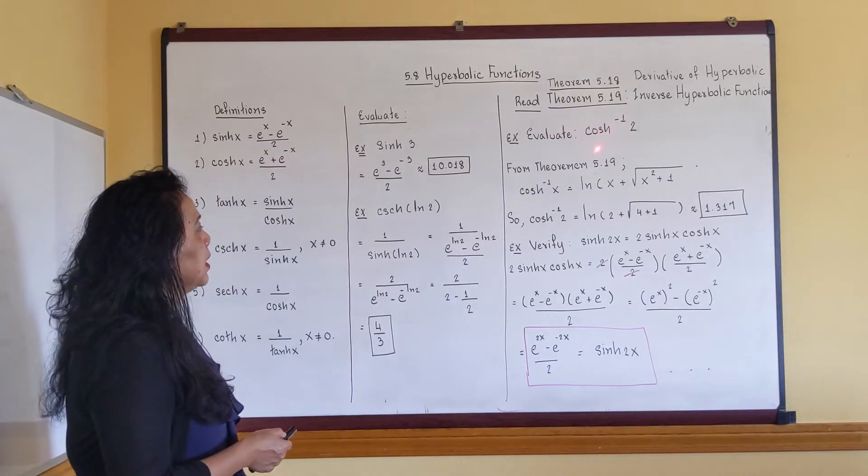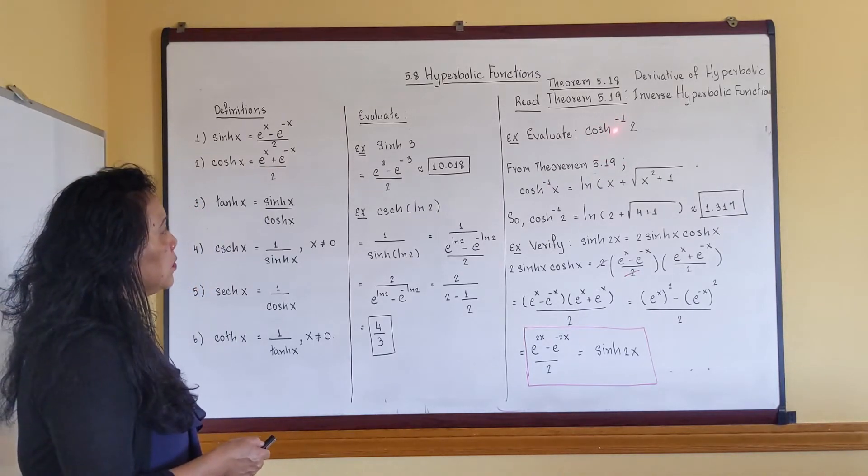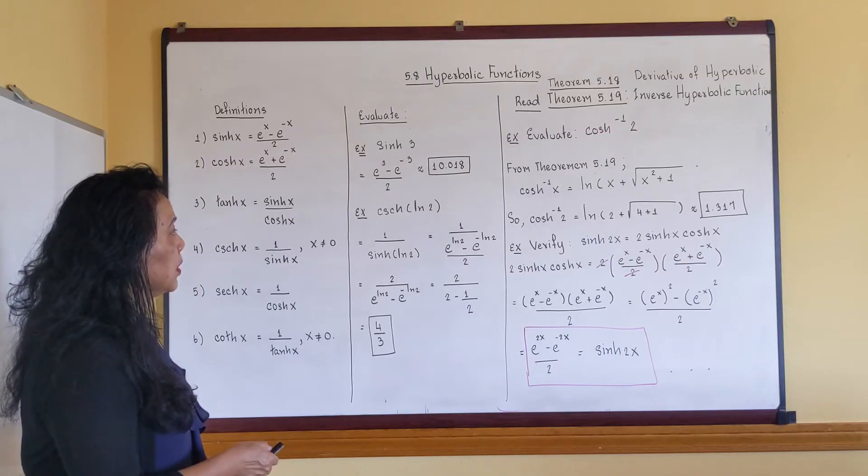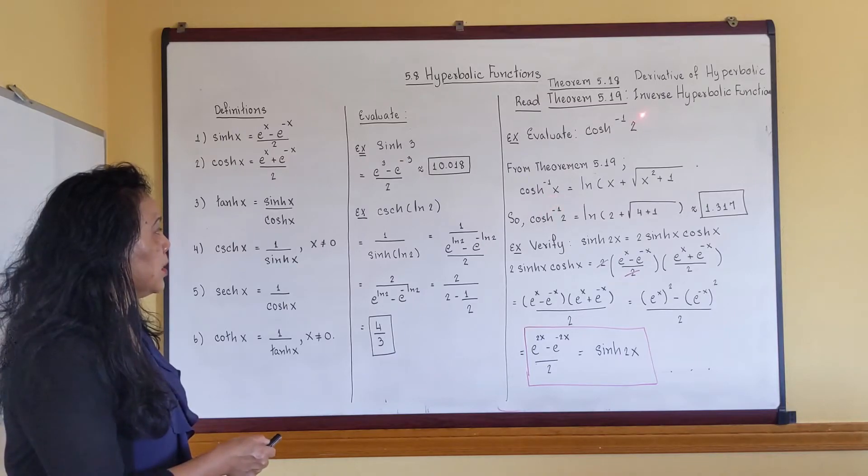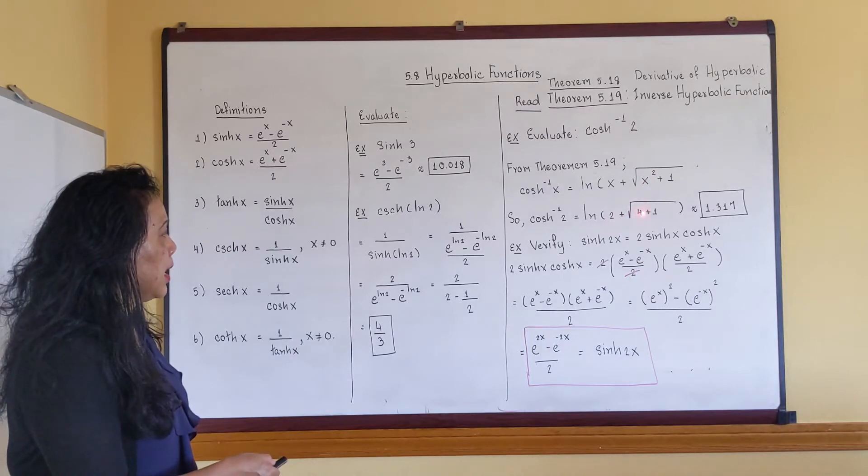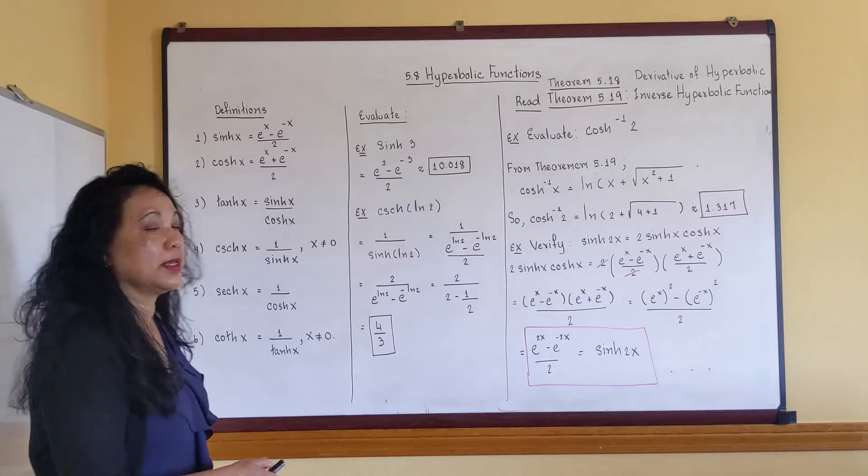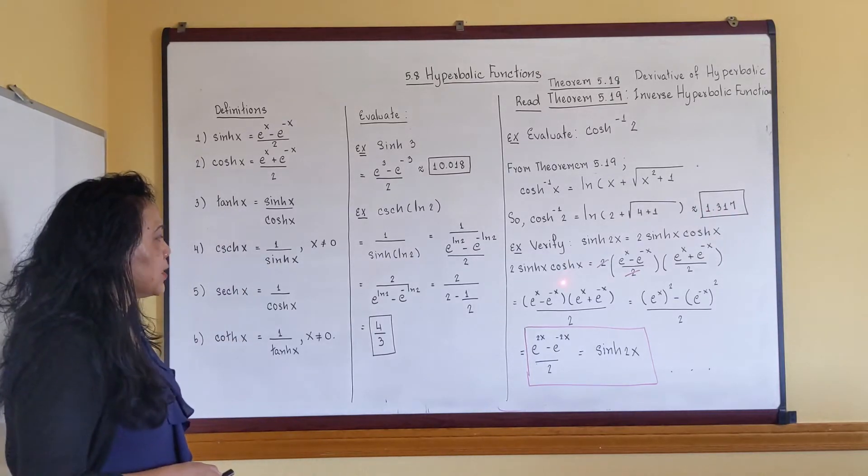If you have an inverse of hyperbolic cosine of 2, you just apply the theorem here. This is what the theorem says, and then your x is 2. So you're gonna have ln 2 plus square root of 2 squared plus 1. Use calculator and your answer is 1.317. It's straightforward.